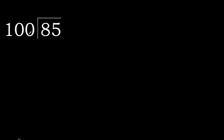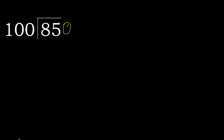85 divided by 100. 8 is less, therefore next. 85 is less, therefore next. That is not a number, therefore always complete with 0. Here, 0 point.